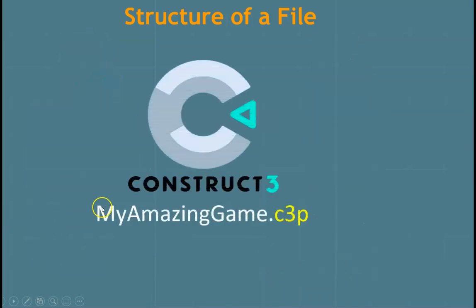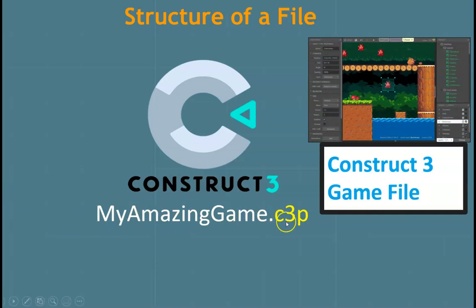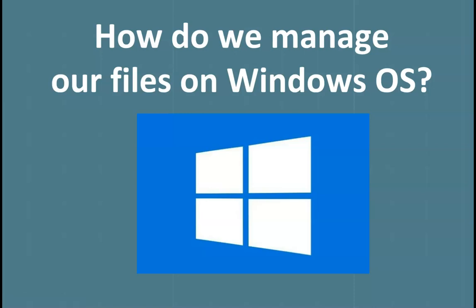In Construct 3, whenever we finish our game and save it, Construct 3 will create a C3P extension that attaches to the name that we've called our game. Any time we see an extension that has C3P, we can be certain that this is a Construct game. When we open this C3P file, what we will discover is a Construct project — a game that we have been working on or someone has been working on. The next question I want to answer is: how exactly do we manage our files on the Windows operating system? Let's go ahead and get started.